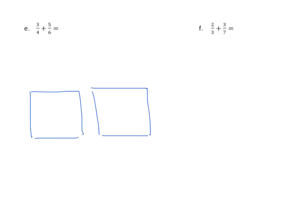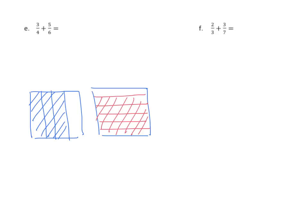3 4ths. Partition that using three vertical lines. We'll shade in three. Going to the second one, we have 5 6ths. So we can use five horizontal lines and shade five of them in. Now we'll find our common denominator for the first addend by putting in those five horizontal lines to partition it into six equal parts. And we see that we have 24 parts. Out of the 24 parts, we have 3 times 6 is 18. So our numerator is 18 and our denominator is 24.